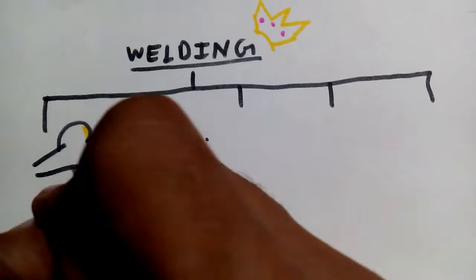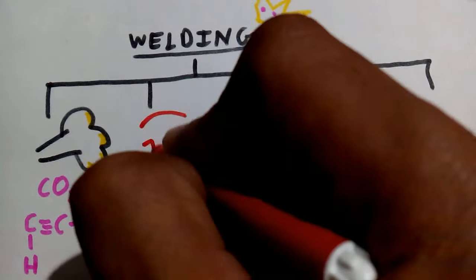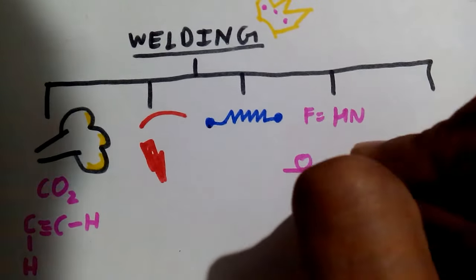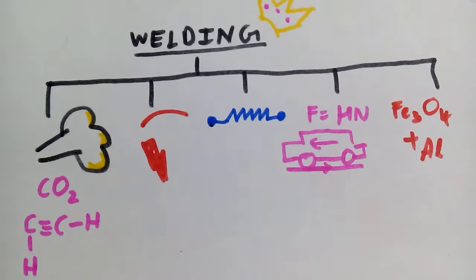It is classified into five important types namely gas welding, arc welding, resistance welding, solid-state welding and thermochemical welding.